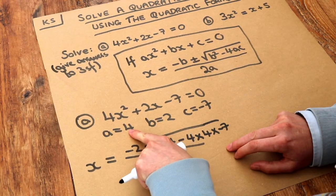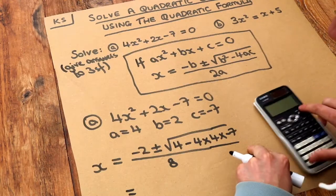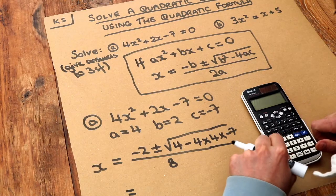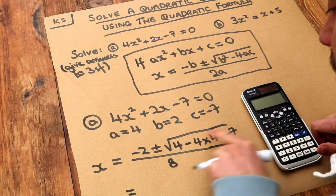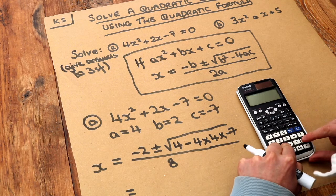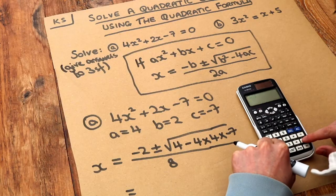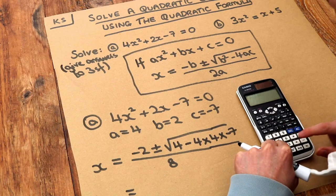And then we just need to put this into our calculator. So I'm going to press the fraction button first, and first I'm going to do it with the plus. So I'm going to do minus 2 plus the square root of 4 minus 4 times 4 times minus 7.